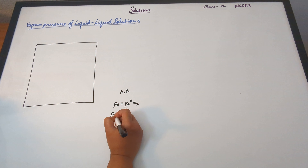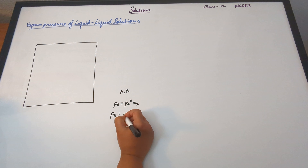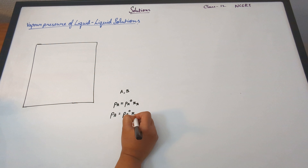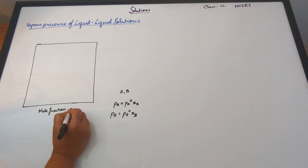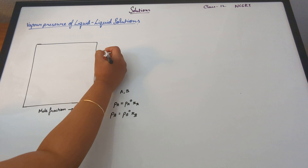In the previous video, we discussed Raoult's Law and basically the introduction to the vapor pressure of liquid-liquid solutions. In this video, we are going to talk about the graph that is related to Raoult's Law — which is obtained from it. According to Raoult's Law, the partial vapor pressure of a component is equal to the vapor pressure of the pure component multiplied by the mole fraction.